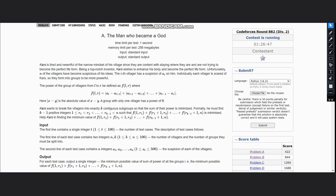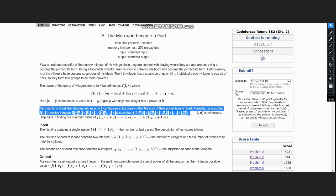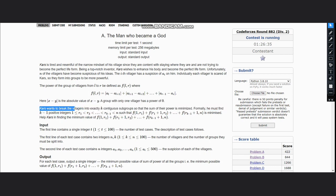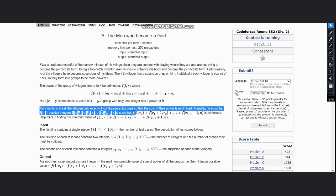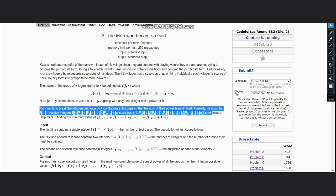Now Cars wants to break the villagers into exactly K contiguous subgroups so that the sum of their power is minimized. Formally, we must find K minus 1 positive integers such that F(1 to R1) + F(R1+1 to R2) and so on is minimized. We need to find the minimum value of this expression.